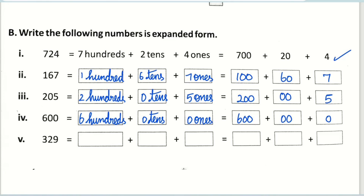Next is three hundred twenty-nine. How many hundreds? Three hundreds. How many tens? Two tens. And how many ones? Nine ones. So it is three hundred plus twenty plus nine.